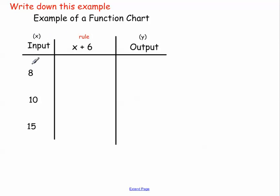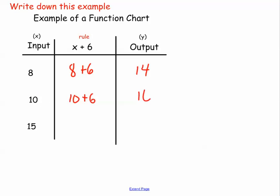Here's my x value, which I will give you. Here's the rule, and then the output you'll have to figure out. So basically the x value — I'm just going to plug it in. So instead of x, I'm going to put an 8, then plus 6, because plus 6 is my constant, so my y value would have to be 14. Plug in my x value, plus 6, so my y value would have to be 16. Plug in my x value, so y would have to equal 21.